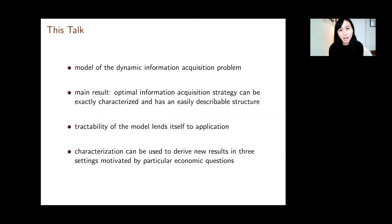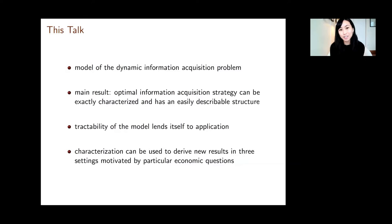What I'm going to show you first is a model of this dynamic information acquisition problem, where it turns out that the optimal information acquisition strategy can actually be exactly characterized. Moreover, that solution has a rather simple and easy-to-describe structure. I'm going to spend the first half of the talk describing this model and this solution and explaining why the solution happens to have those features. Various aspects of the solution are interesting in themselves conceptually — for example, the fact that this exact solution exists and can be characterized. The tractability of the solution also lends itself to applications, which we explore in the paper with three different economic applications.